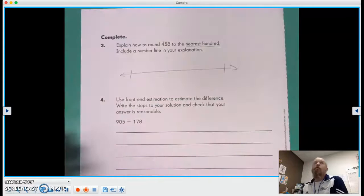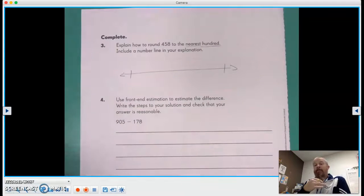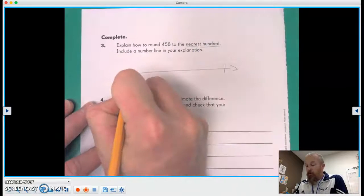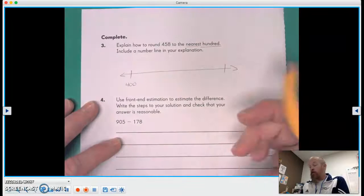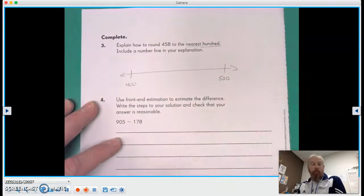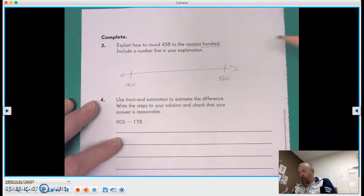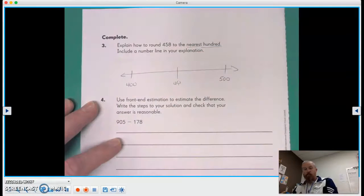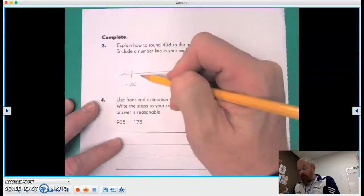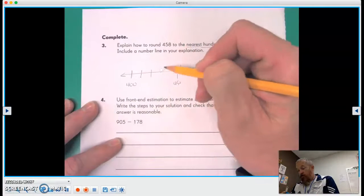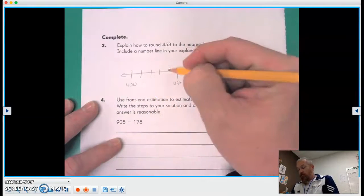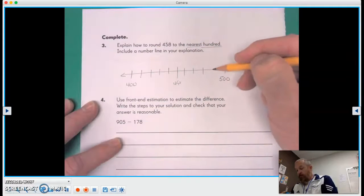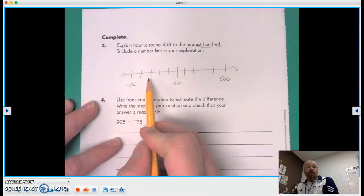So when we say the number 458, the low end is the very first number, the four. 400. So this is 400. 100 more than 400 is 500. Now halfway between 400 and 500 is 450. And each line, we can make a bunch of lines. I go 10, 20, 30, 40, 50, 60, 70, 80, 90. So every one of these lines is worth 10.